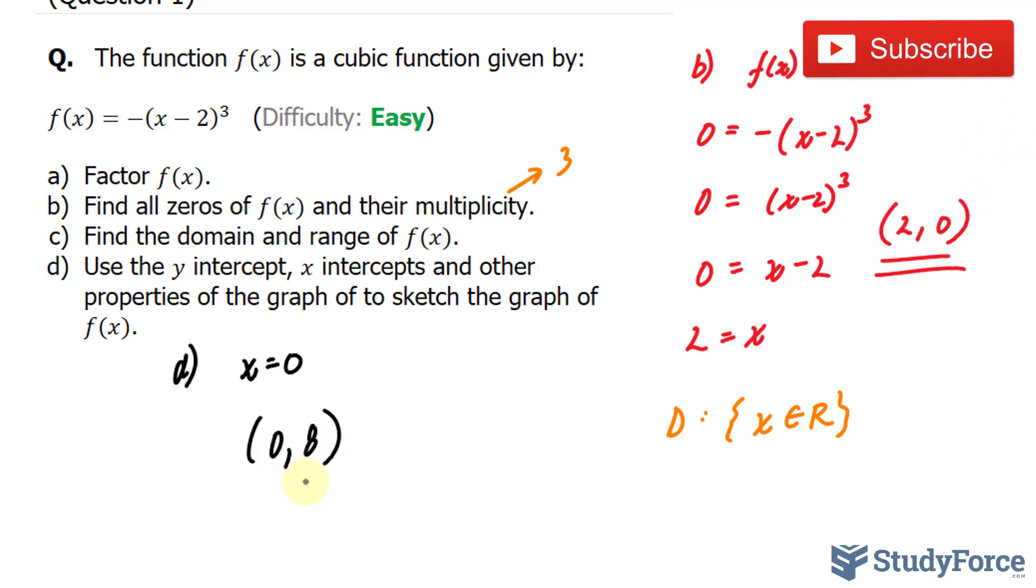In addition, they refer to properties of the graph. One of the properties with cubic functions is that if the function has a leading negative factor, such as in our case, then the function will go like this.